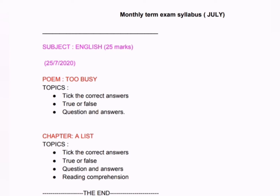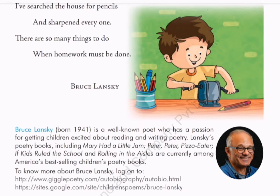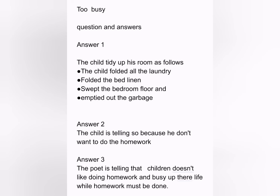The syllabus includes two chapters: the poem 'Too Busy' and the chapter 'A List,' including all the correct question and answers. The poem 'Too Busy' is all about a boy who doesn't want to do his homework and instead gets involved in household work. After finishing all the household chores, he then wants to do the homework. Here are the question and answers for that.